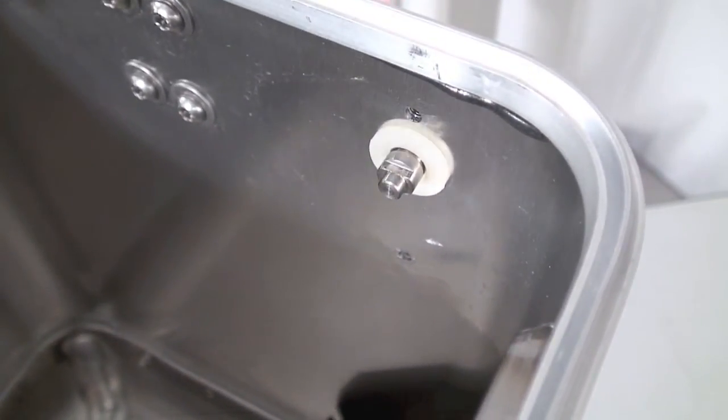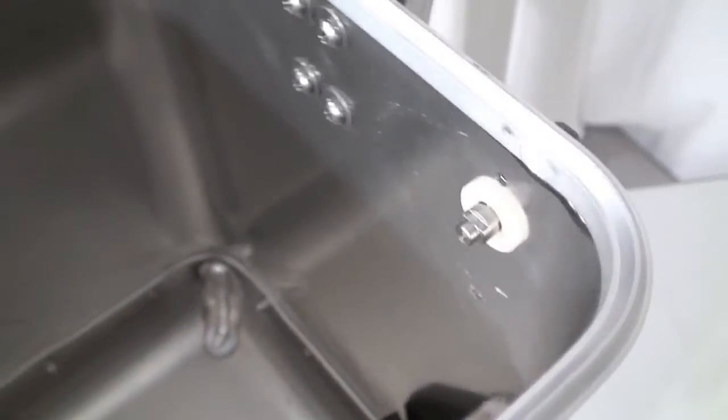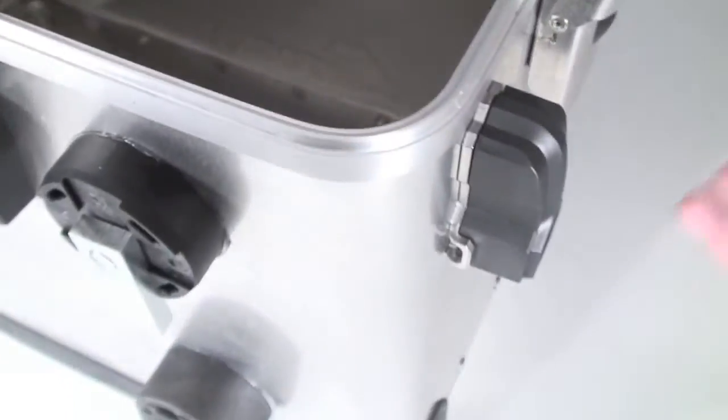At this point you can now remove the lever from the outside of the pannier just by pulling it off.